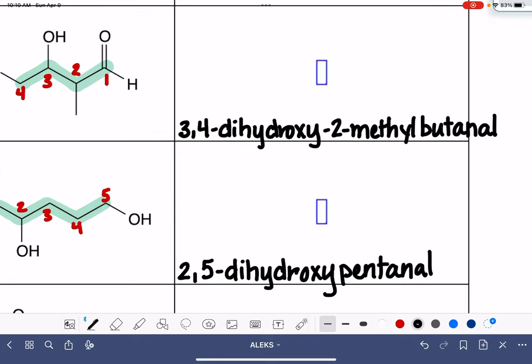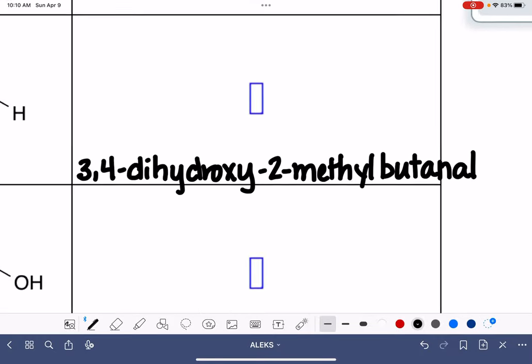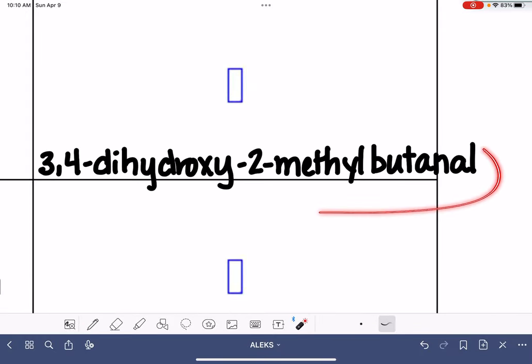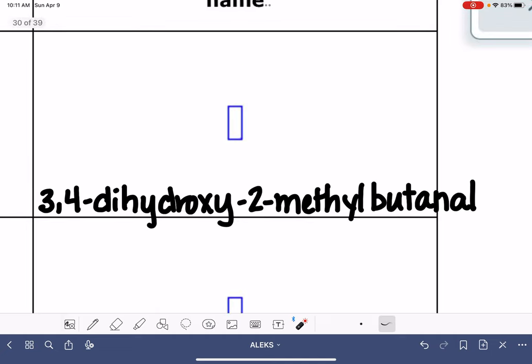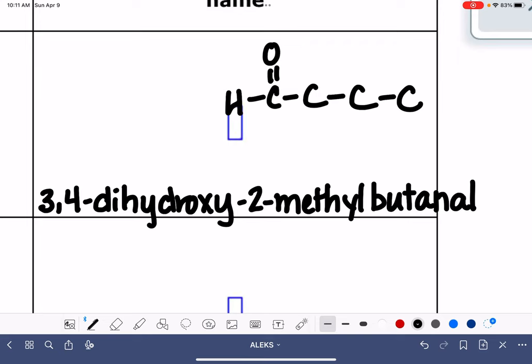Now, let's just imagine if the problem was the other version where you're given the name of the molecule and you're asked to come up with its structure. In this type of problem, I always like to start at the end first. Butanal tells me that I have four carbons. And the AL part tells me that I have an aldehyde, and the aldehyde is always on carbon number one. That's just how it works.